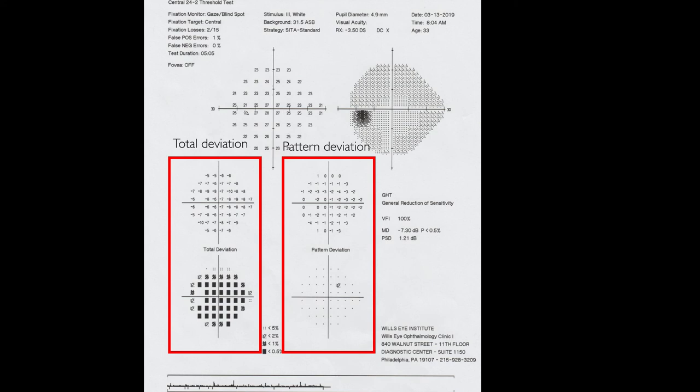Total deviation and pattern deviation are displayed in numeric value and in plots. To interpret the plot, we need to look at the scale that is located between two red boxes.